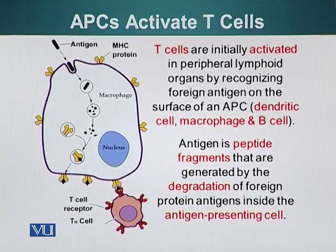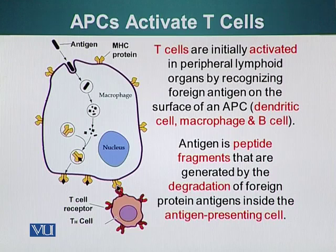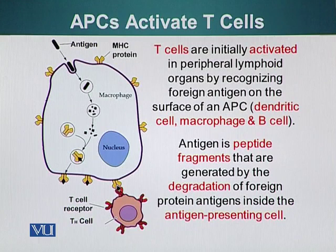T cells are initially activated in peripheral lymphoid organs by recognizing foreign antigen on the surface of APCs — antigen presenting cells. These cells include dendritic cells, macrophages, and B cells. B cells can also present antigens to T cells directly, which we will discuss later. The APCs present antigen fragments, or peptide fragments, generated by degradation of foreign protein inside the cell.